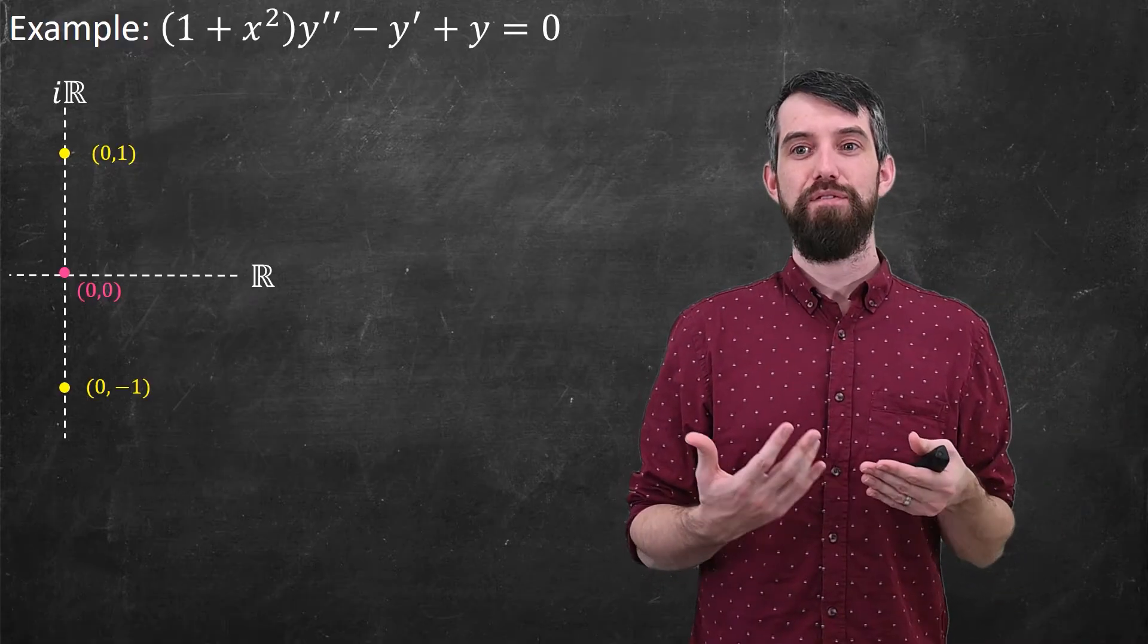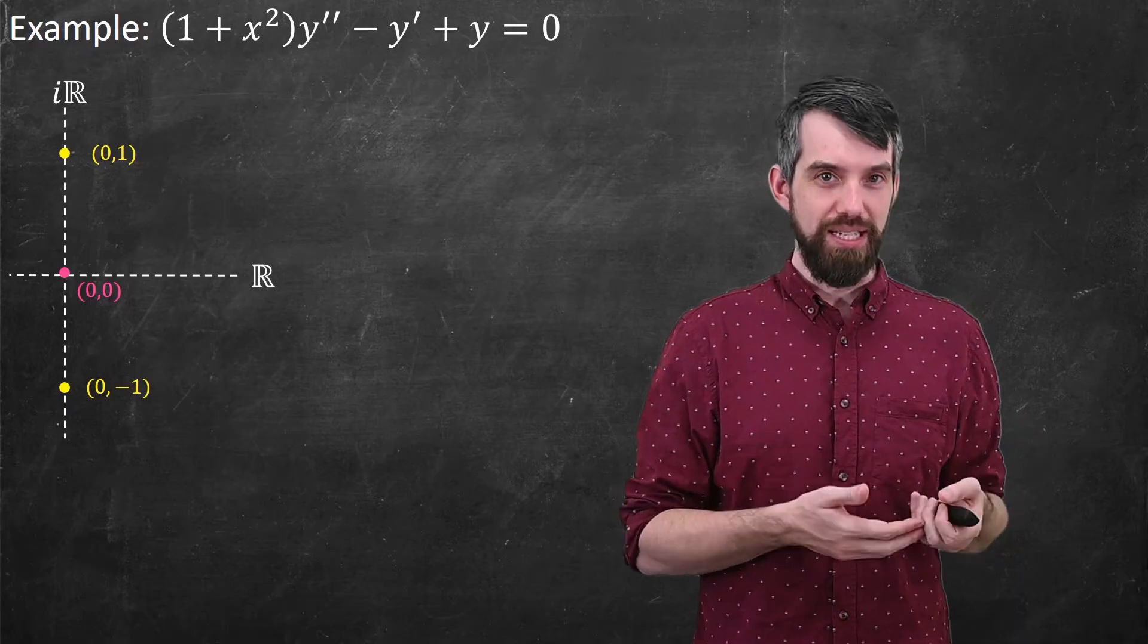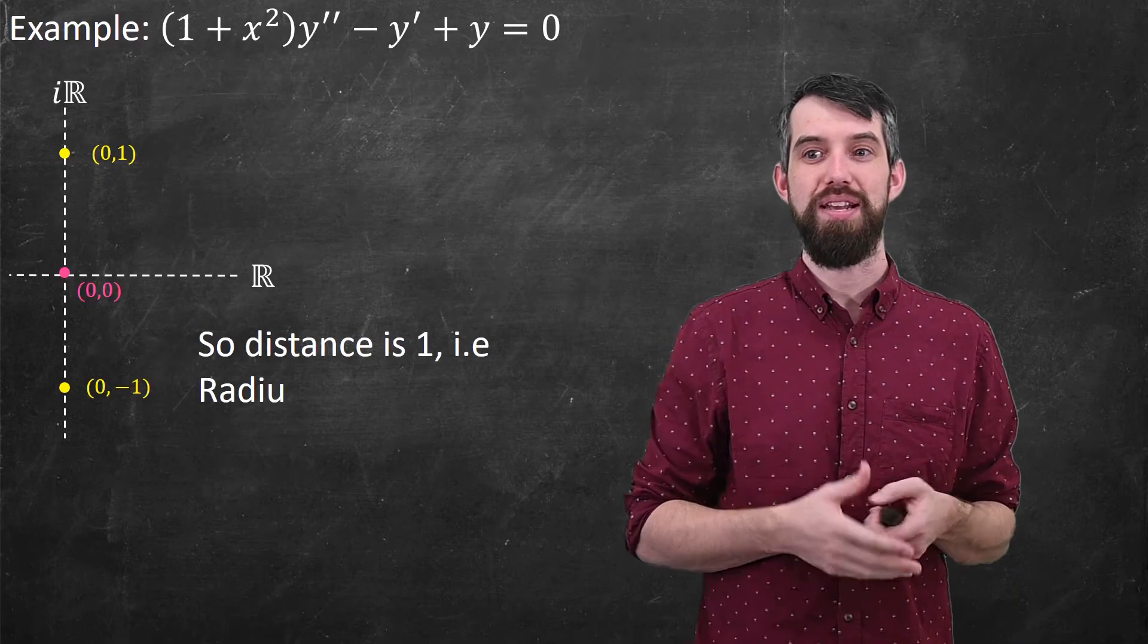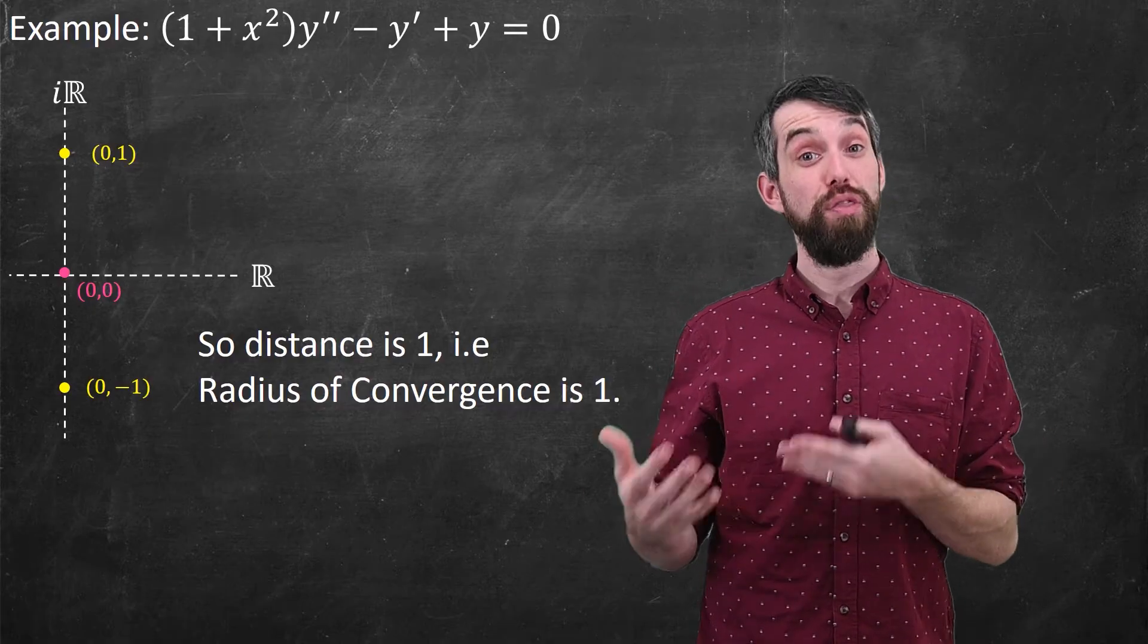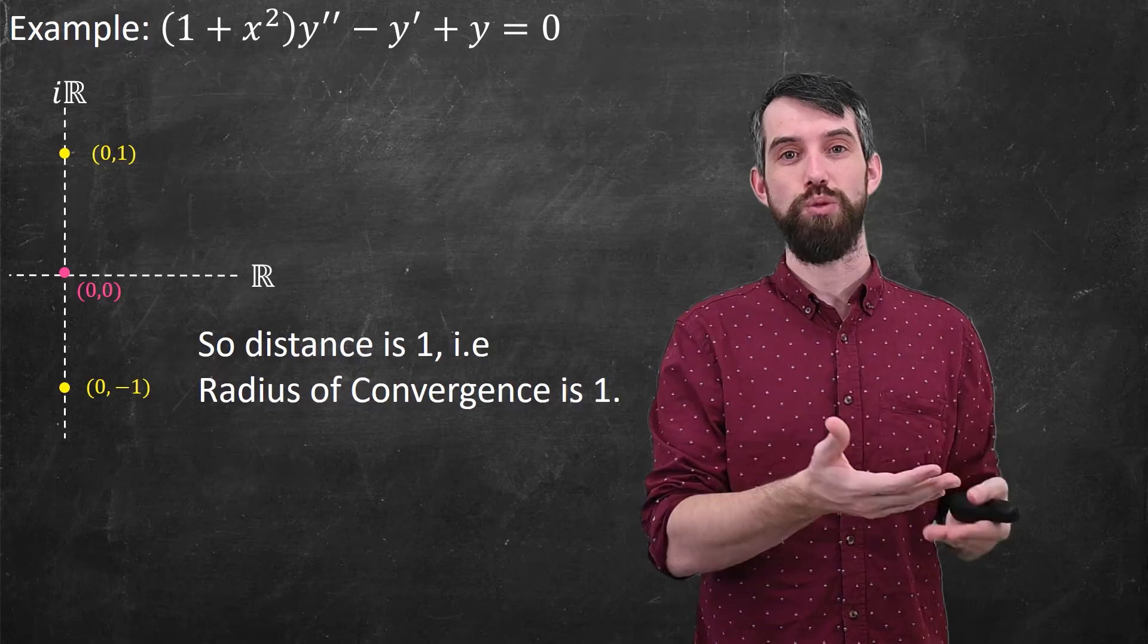Then, if the claim is to find the distance between (0, 0) and (0, 1), well, I know that distance. That distance is just 1, and therefore, by our theorem, our radius of convergence is indeed 1 as well.